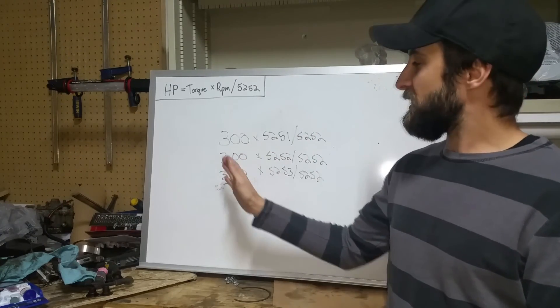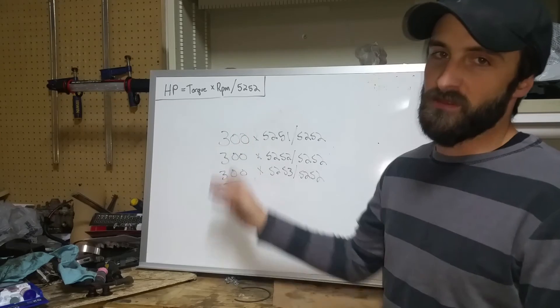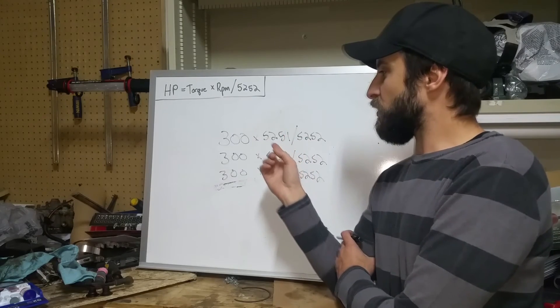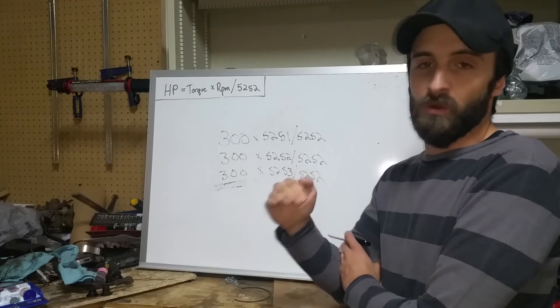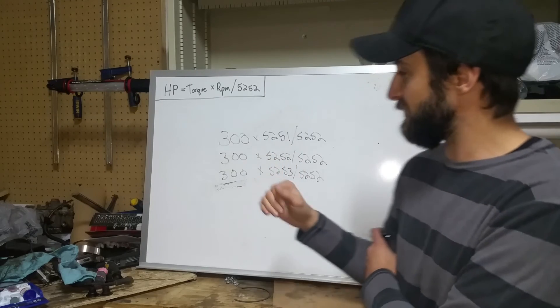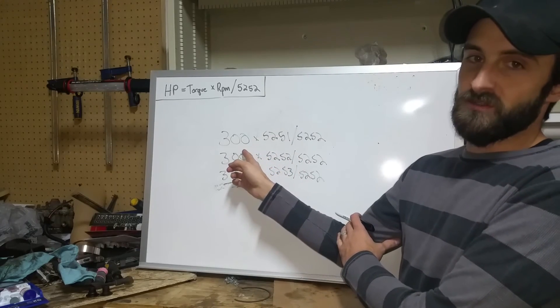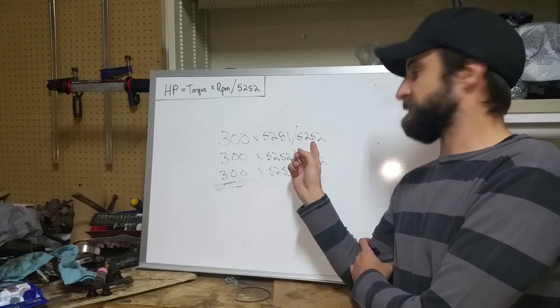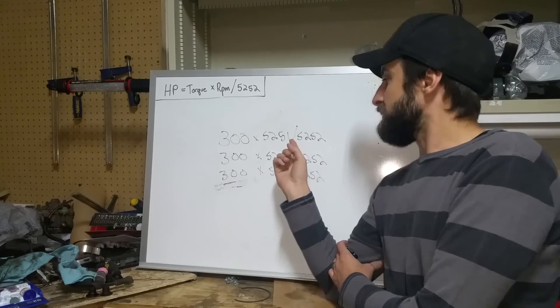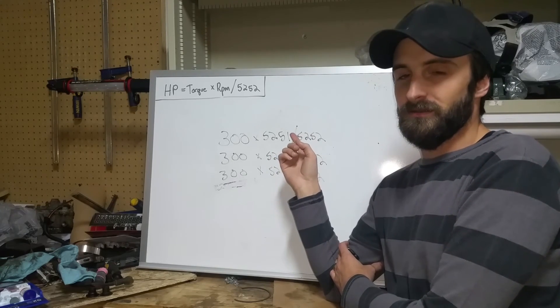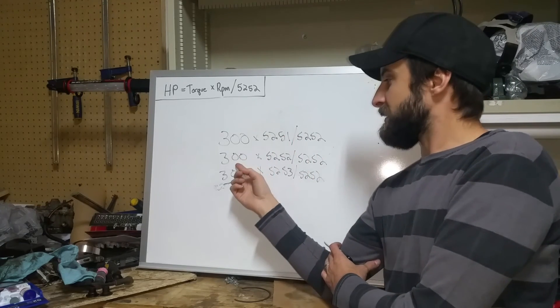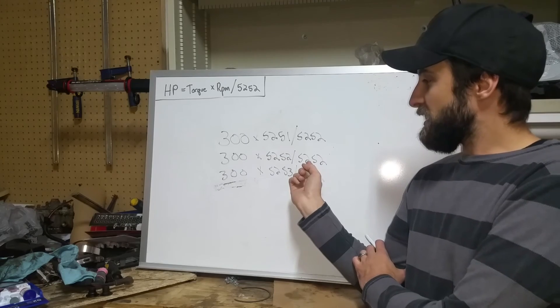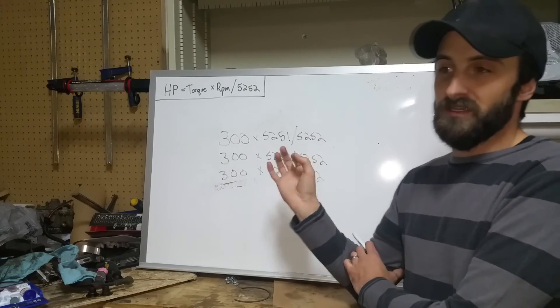As you're going through the torque curve, assuming that your torque is staying the same at 300 foot-pounds, as you increase in RPM, your horsepower is going to go from lower than your torque to higher than your torque based on this calculation. So if you take 300 foot-pounds torque multiplied by 5,251 RPM divided by 5,252, your horsepower is still going to be lower than your torque. 300 multiplied by 5,252 divided by 5,252, your horsepower and torque are going to be the exact same.